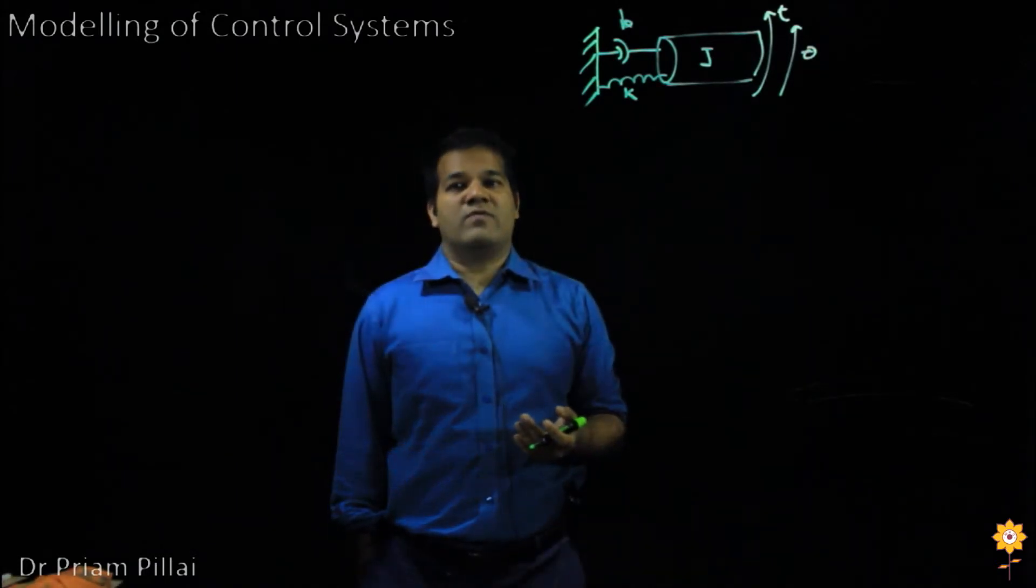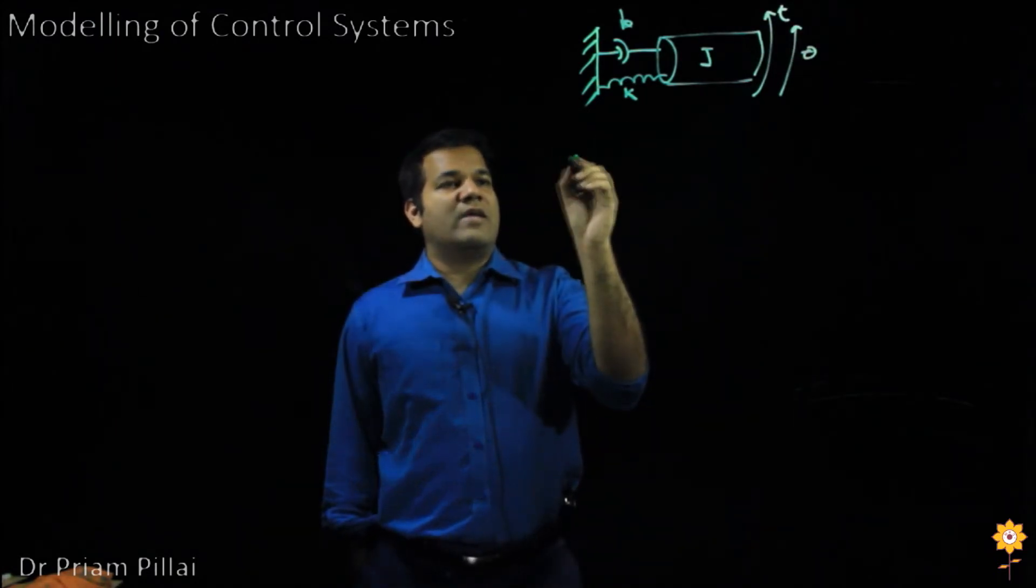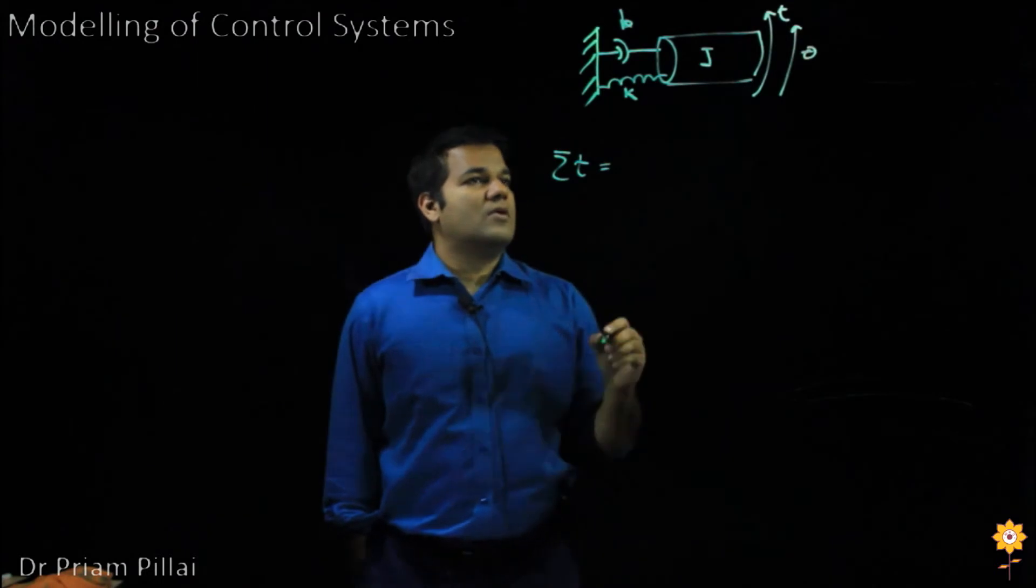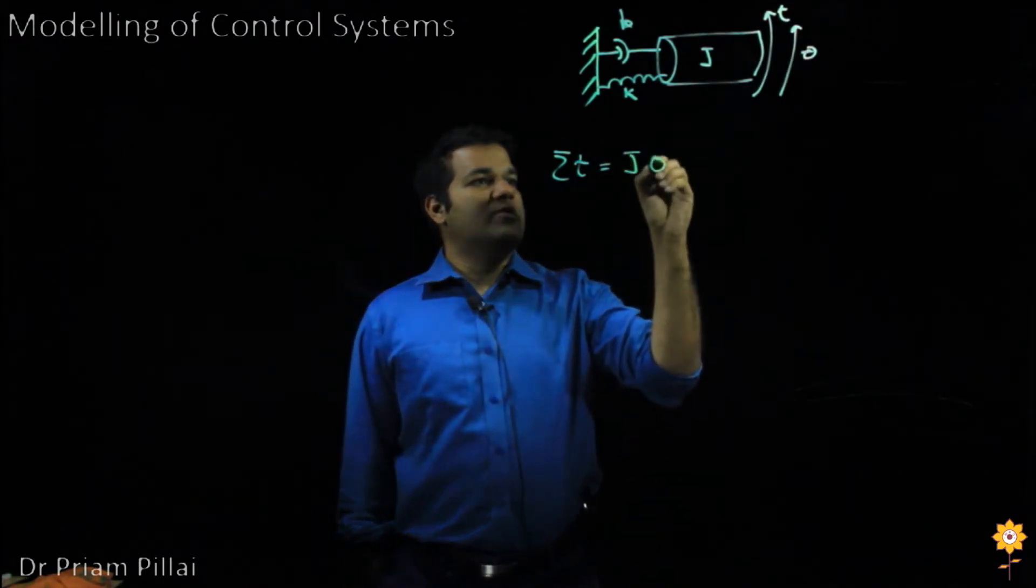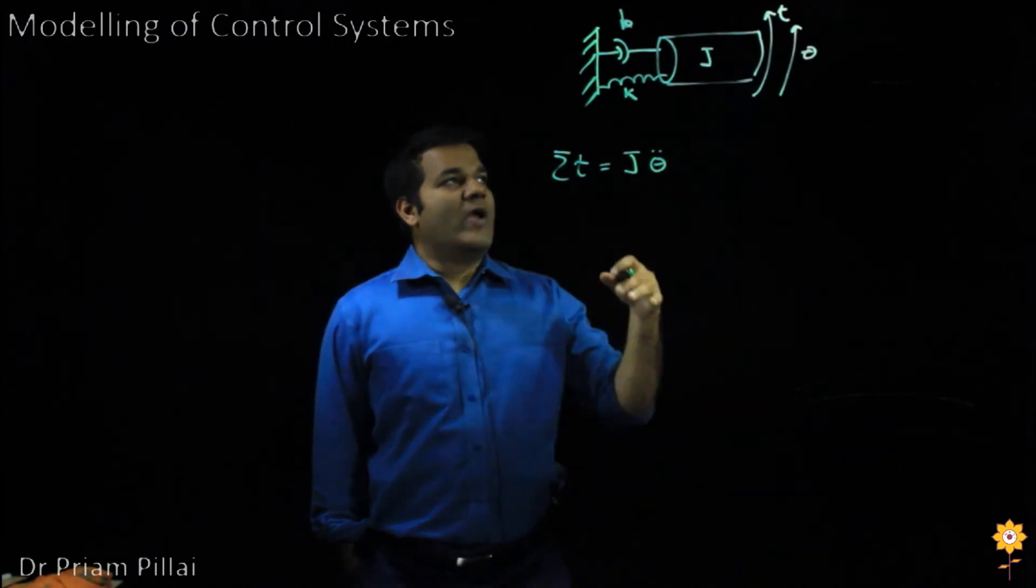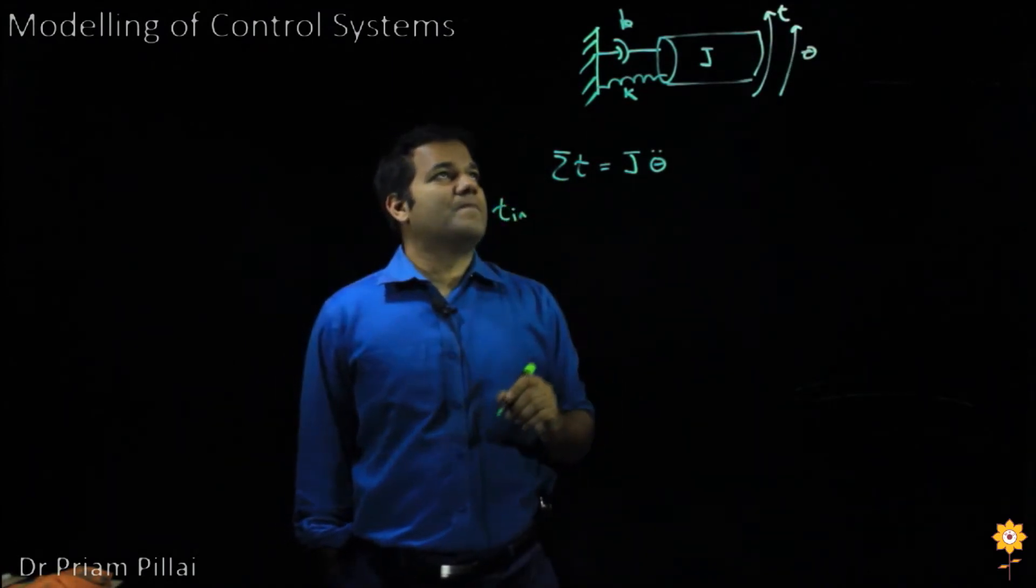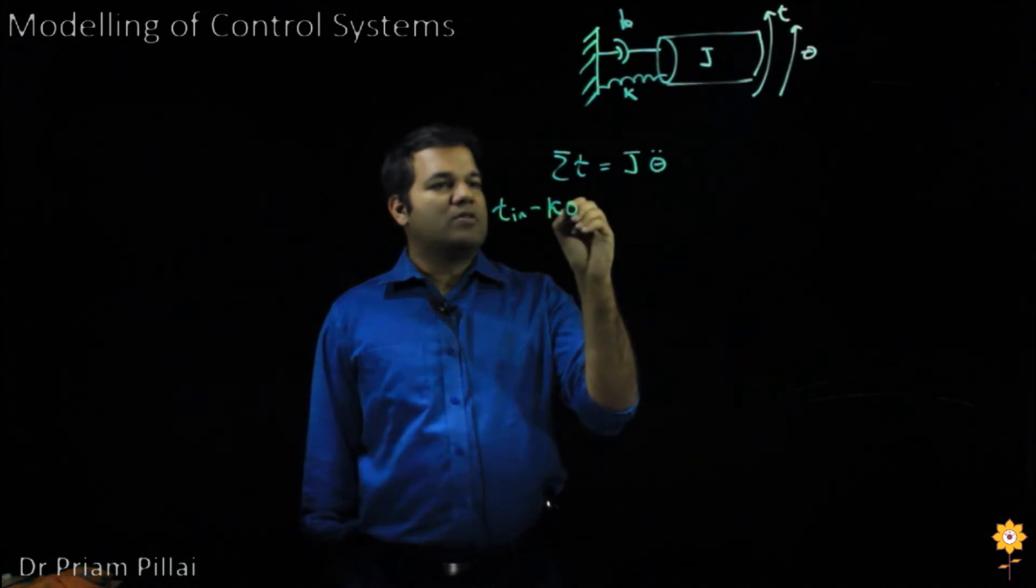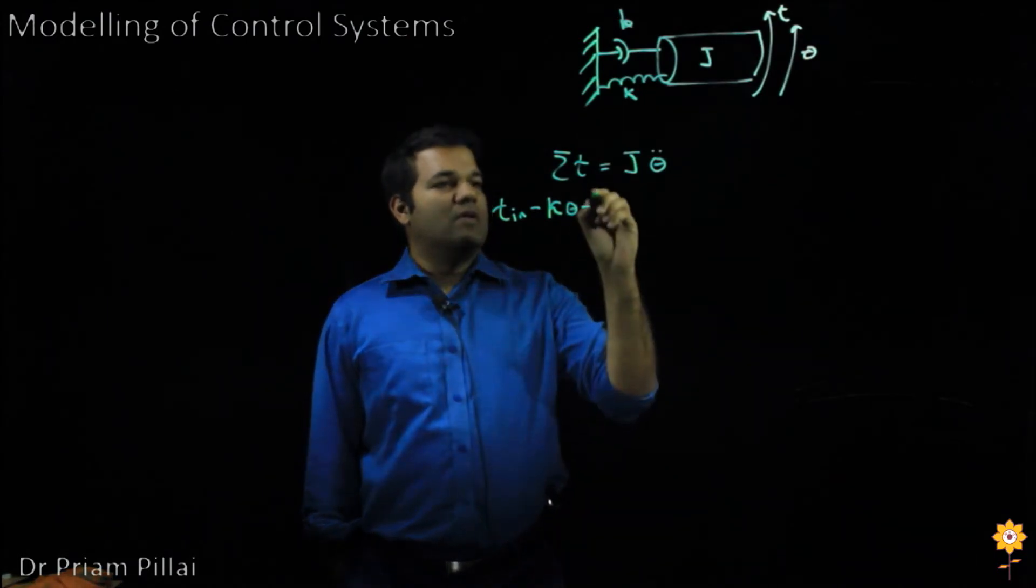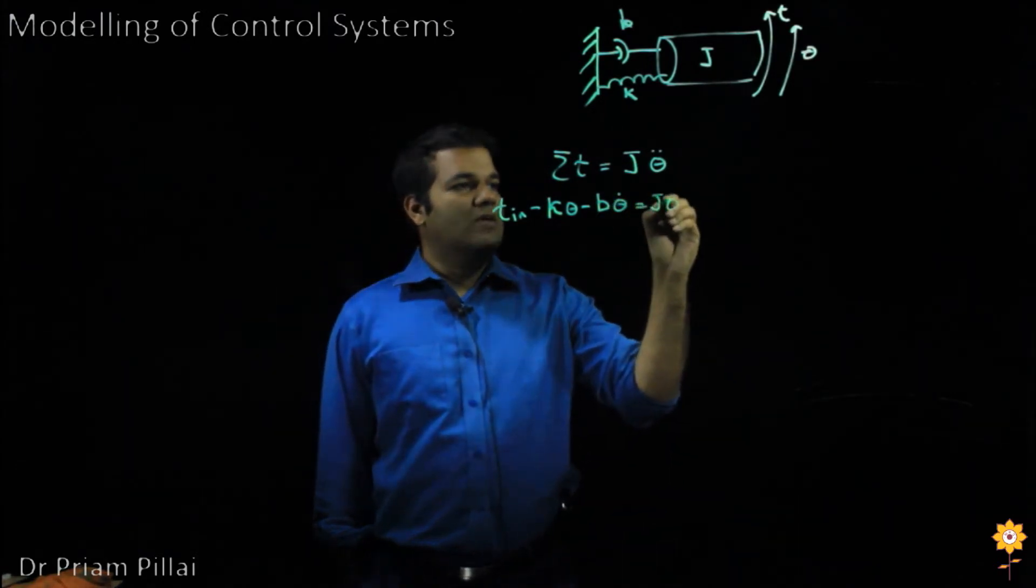The same way that we applied conservation of linear momentum, we can apply conservation of angular momentum here and say that the sum of all the torques acting on that shaft would equal the moment of inertia J times the angular acceleration theta double dot. We can add up all the torques on that shaft and we will get the input torque Tn minus the torsional stiffness multiplied by the angle minus the damping multiplied by the angular velocity of that shaft equals J theta double dot.